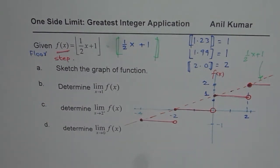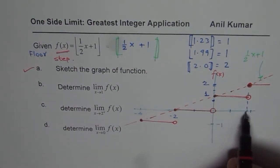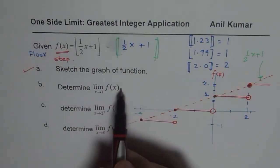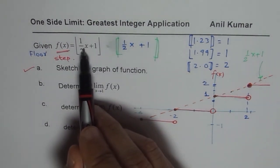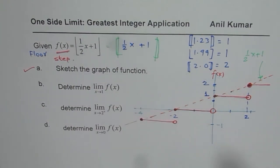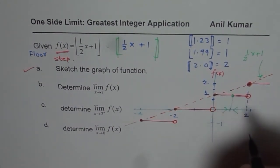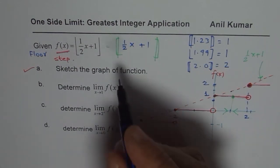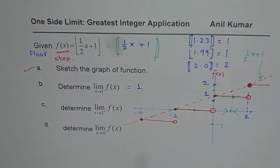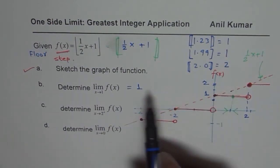Now it becomes easier to answer the limit questions. For the limit as x approaches 1: substituting x equals 1 gives the inner value 1.5, whose greatest integer is 1. Whether approaching from the left or the right, we approach the same value of 1 on the graph. Therefore, the limit as x approaches 1 is equal to 1.